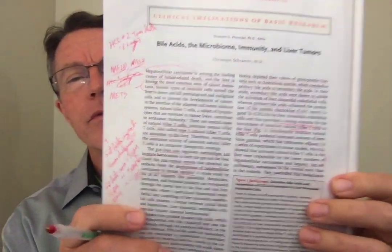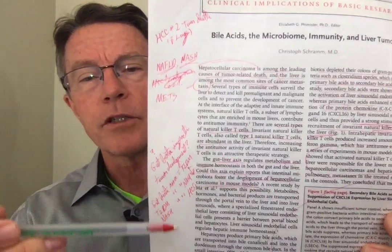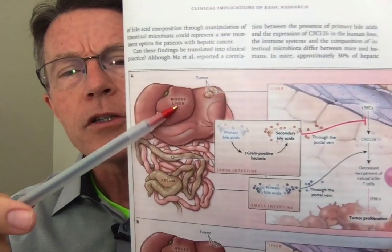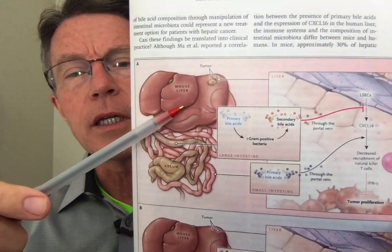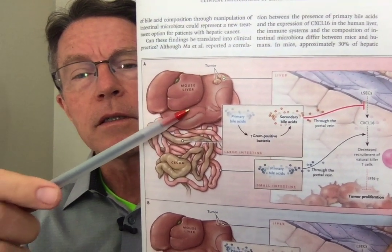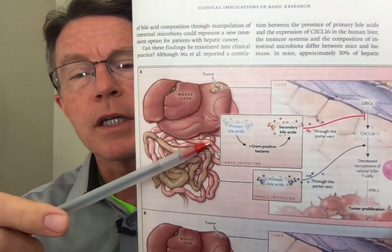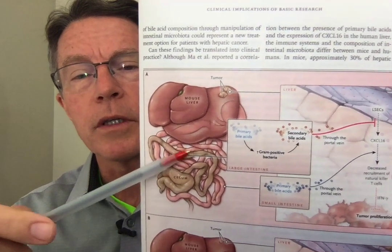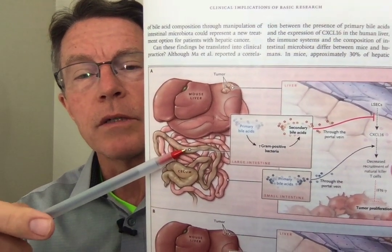Now what does the gut biome have to do with fatty liver disease? I'll spare you having to go through all that text and we'll go straight to the pictures — that always helps. So they discovered this in rats. Basically, this is the rat liver, this is the small intestine — this pink snake-looking thing — and this brown worm-looking thing is the rat large intestine.